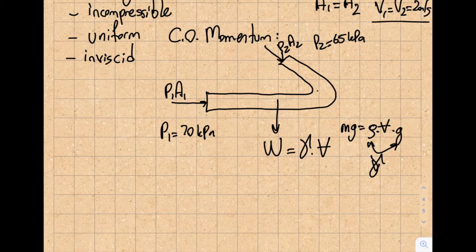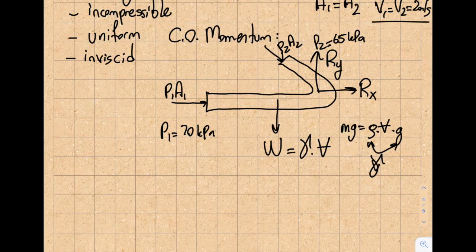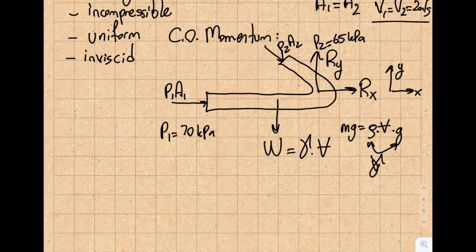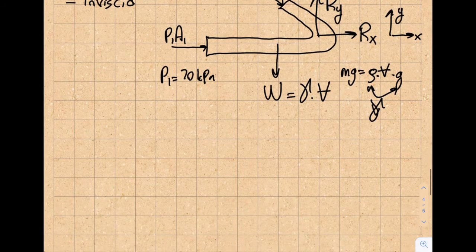I'll have unknowns Rx and Ry — that's what I'm being asked to find. Don't worry about whether Rx or Ry should be negative initially; just assign a positive direction. The math will tell me if my choice was wrong — a negative result simply means the actual direction is opposite to what I assumed.